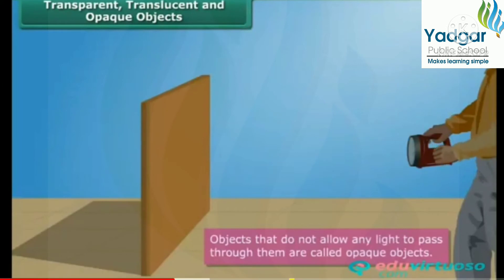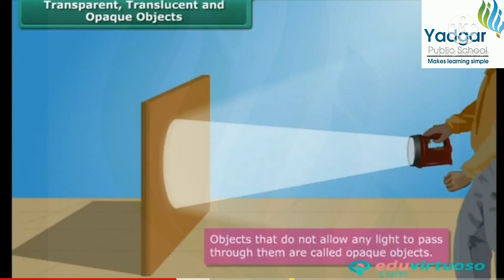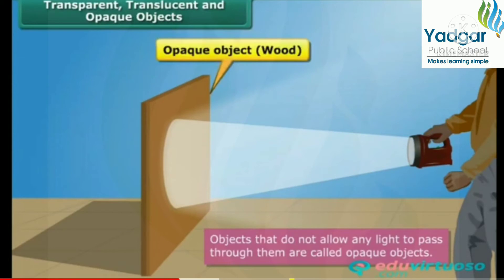Objects that do not allow any light to pass through them are called opaque objects. As a result, we cannot see through them. When light falls on an opaque object, its shadow is formed on the other side of it. Wood, sheets of metal, dark-colored plastics, rocks, etc. are examples of opaque objects.